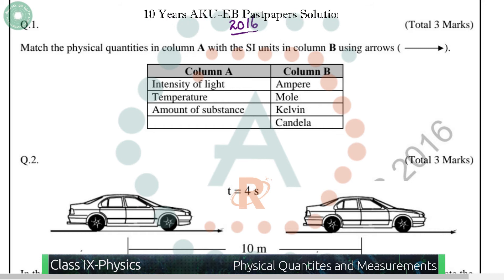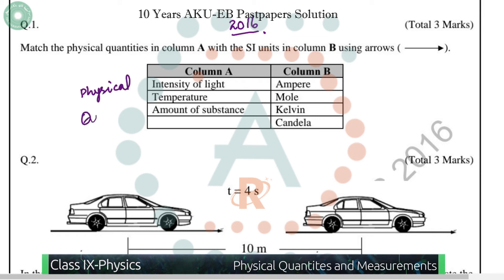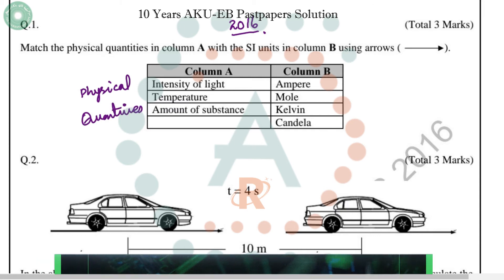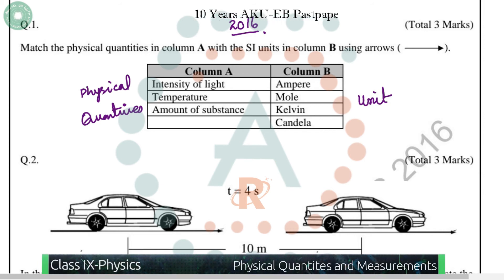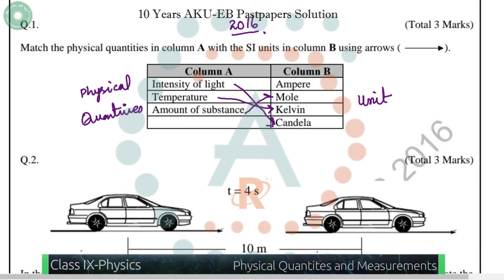In the 2016 paper, we have two columns — Column A contains physical quantities and Column B contains their SI units. We know that intensity of light is measured in candela, temperature is measured in kelvin, and amount of substance is measured in moles. For three marks, we identify each physical quantity with its correct SI unit.